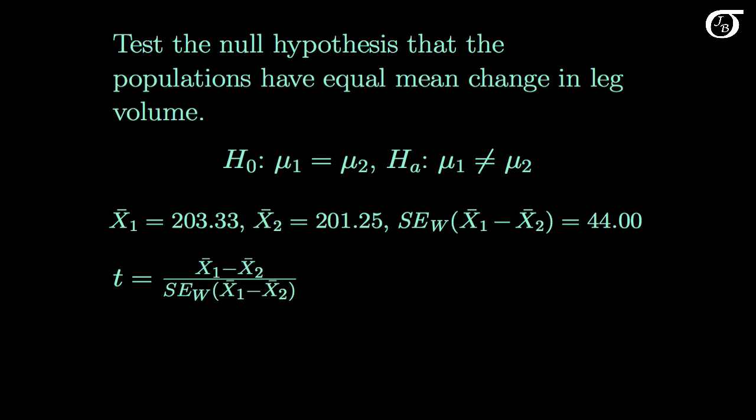Here are the summary statistics along with the t-statistic. And the t-statistic is equal to the difference in sample means, 203.33 minus 201.25 divided by the appropriate standard error of 44.00.